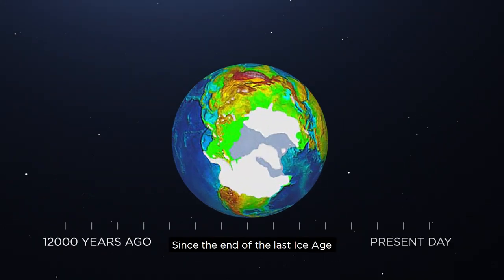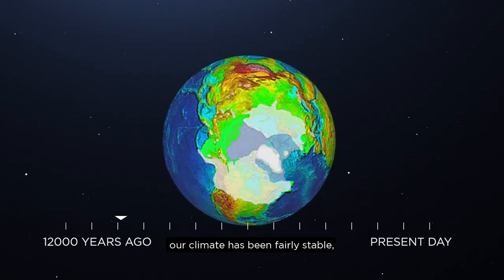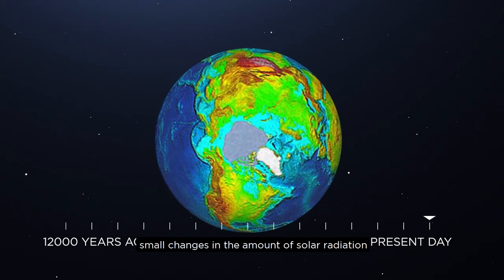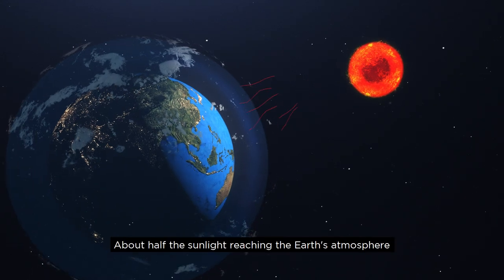Since the end of the last ice age some 12,000 years ago, our climate has been fairly stable, although it has often been affected by small changes in the amount of solar radiation reaching the Earth's surface.